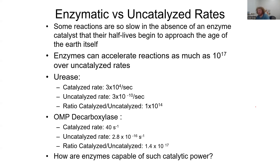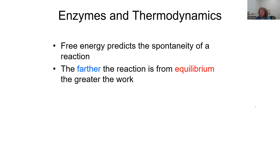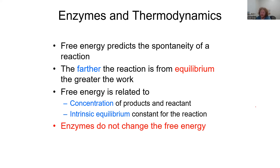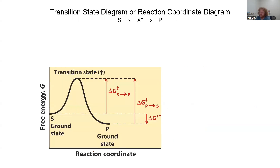How is an enzyme capable of such acceleration? We have to think about thermodynamics. The free energy of a reaction predicts its spontaneity, and enzymes do not change the free energy — they accelerate the rate of the reaction by manipulating the transition state. A stable reactant must surmount a free energy barrier to be converted into a product. The double-dagger symbol represents the transition state.